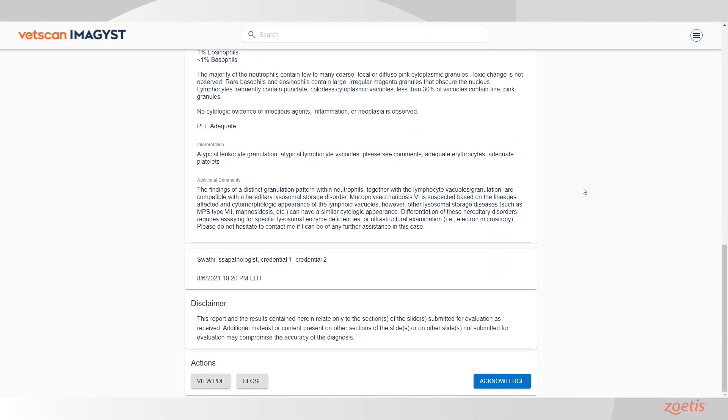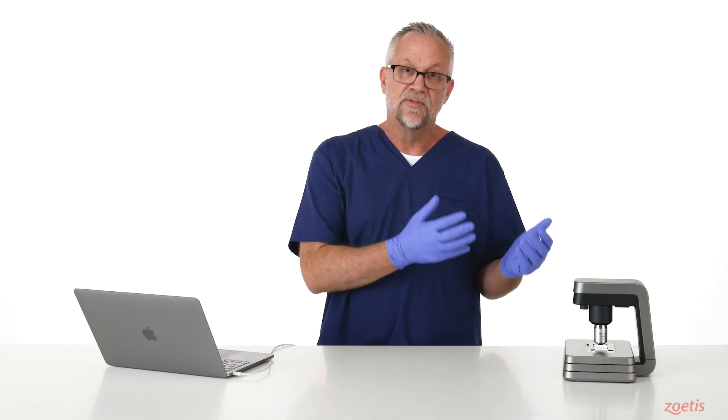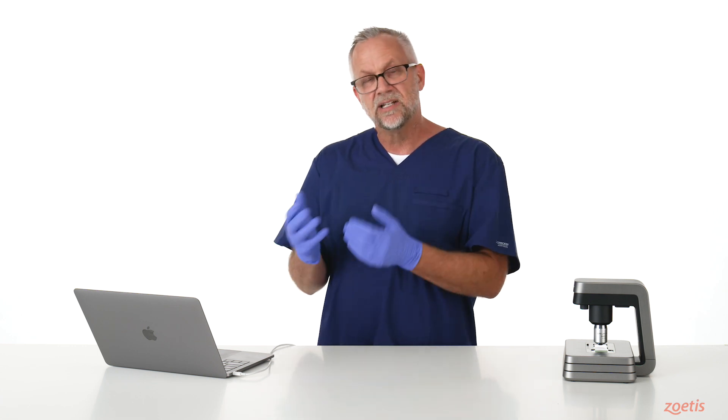And if you scroll to the bottom of the screen, you can acknowledge the report. This indicates that you have seen the report and it will move it from the Ready to Review tab to the Test History tab.